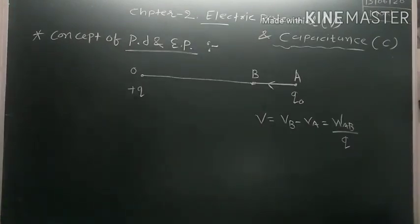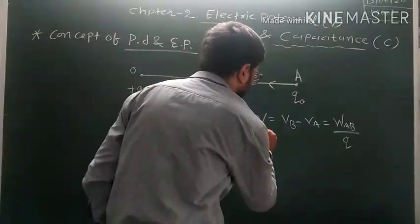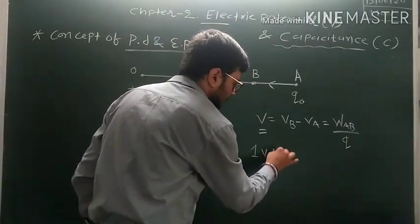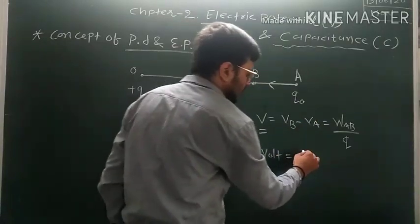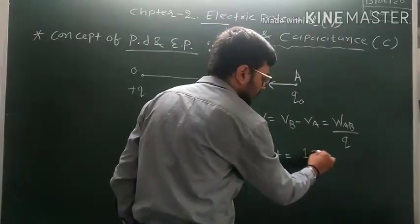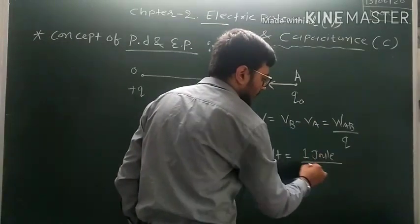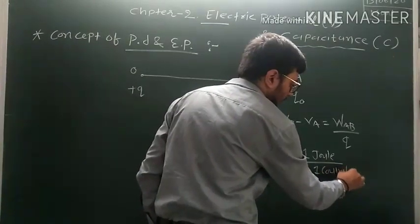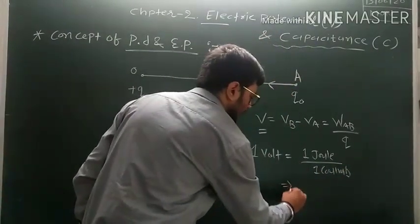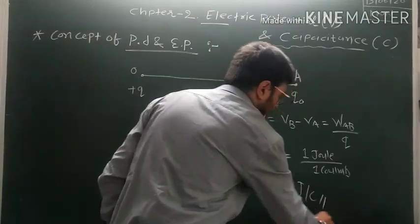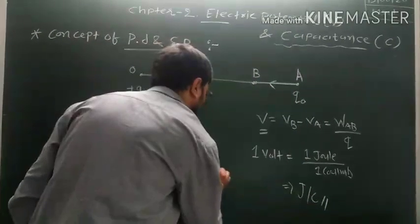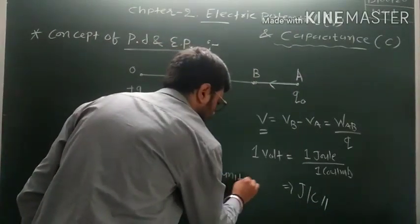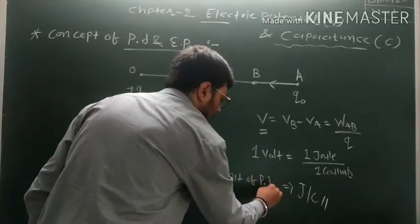The SI unit of the potential difference is: one volt is equal to one joule per one coulomb. That is, joule per coulomb is the SI unit of potential difference.